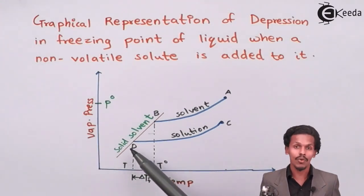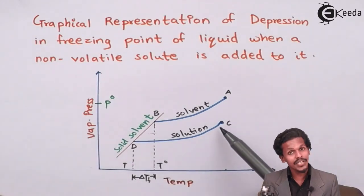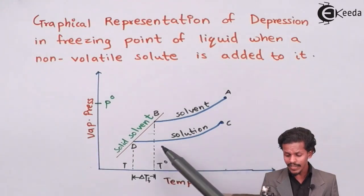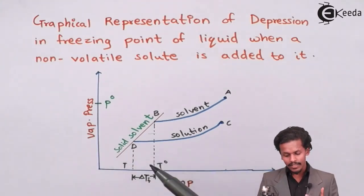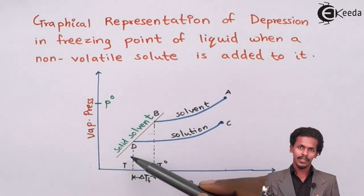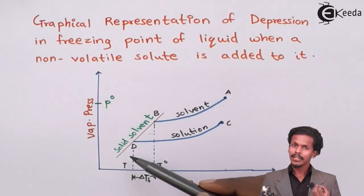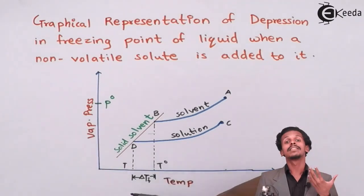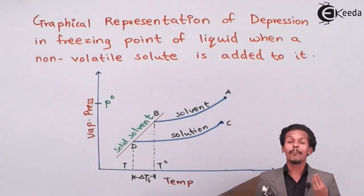So as the temperature decreases, the vapor pressure also decreases and it will decrease at point D. And the point which represents D has a corresponding temperature of T, which means the freezing point for the solution.